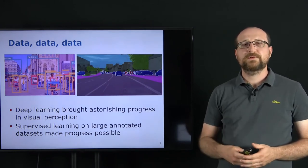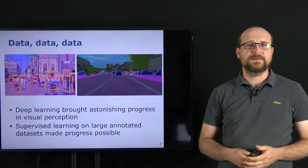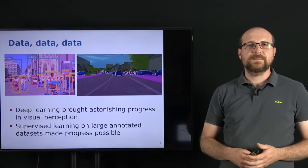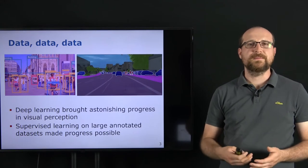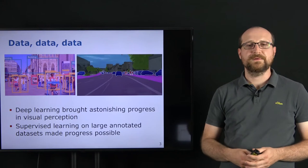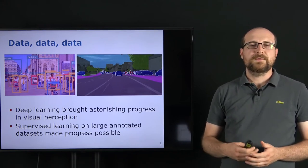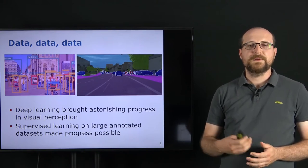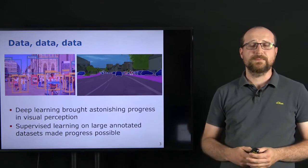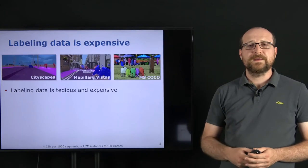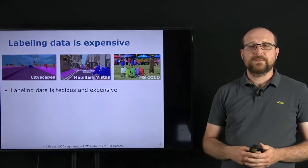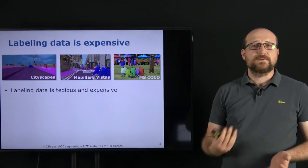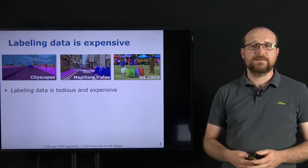This whole progress was basically enabled by having large datasets available. We started with ImageNet, which had over one million images, and these large datasets enabled learning deep neural networks with many parameters. The main workhorse is the supervised learning approach, which requires large annotated datasets. But labeling data is very expensive — it is tedious, requires many annotators, takes a lot of time, and is therefore very costly.